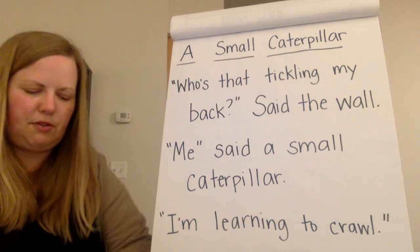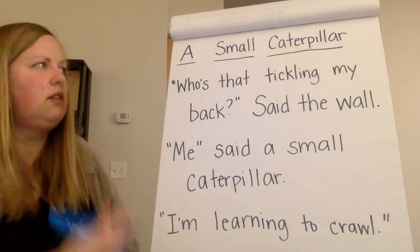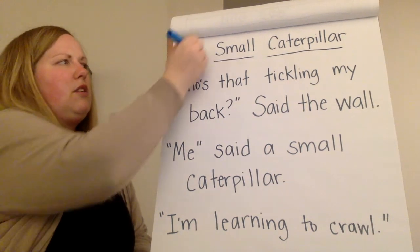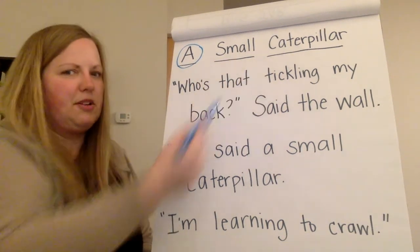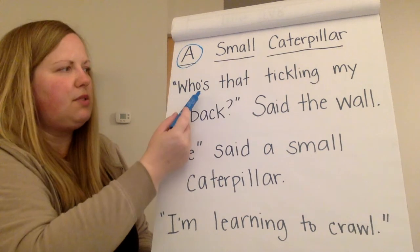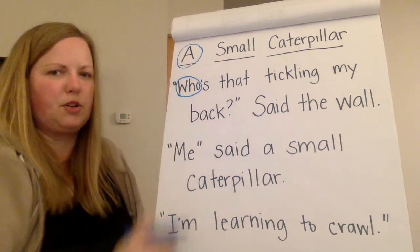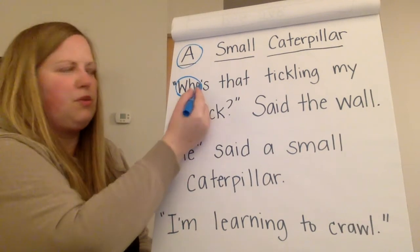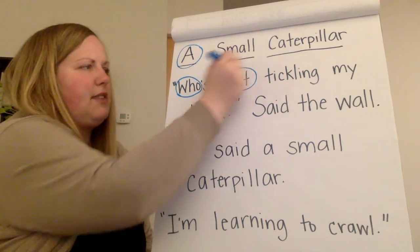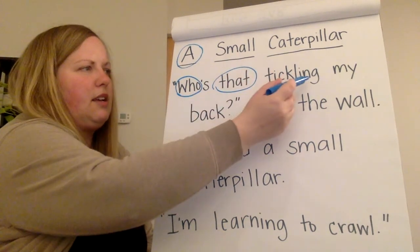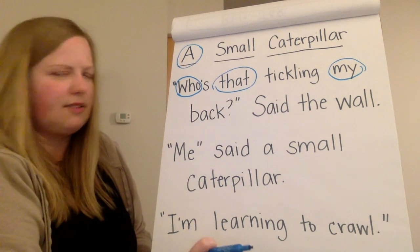Okay, so let's go through and circle the sight words we see. I know 'a' is a sight word. Small caterpillar is not. Who's — this first part is a sight word, 'who,' and then you add who's, meaning it belongs to them or who is that. 'That' is a sight word. Tickling. 'My' is a sight word. Back is not a sight word.